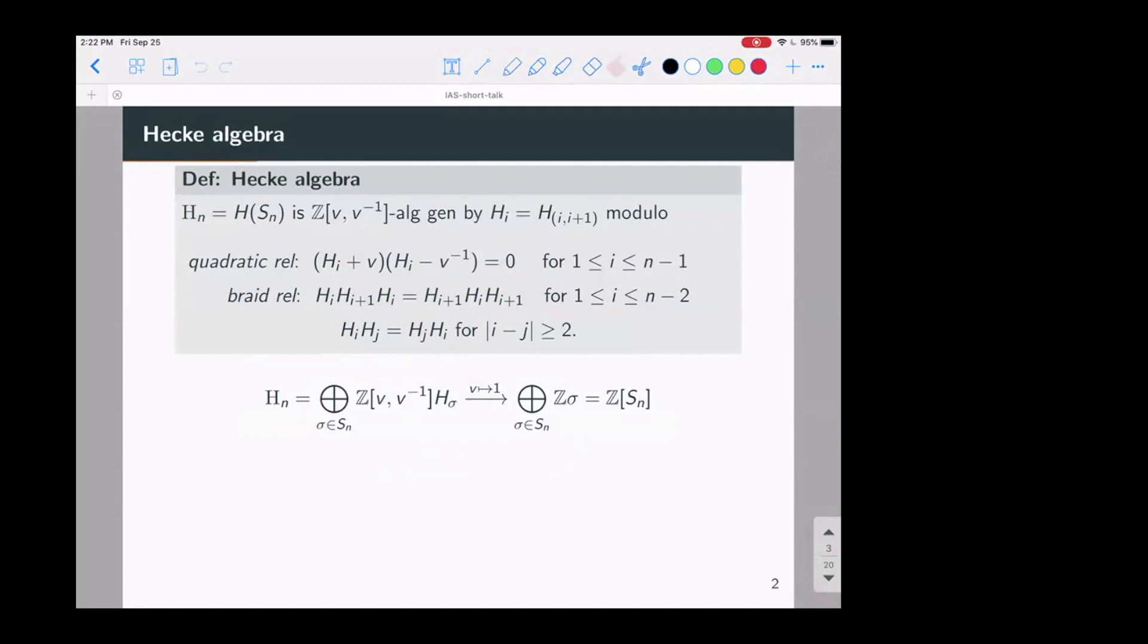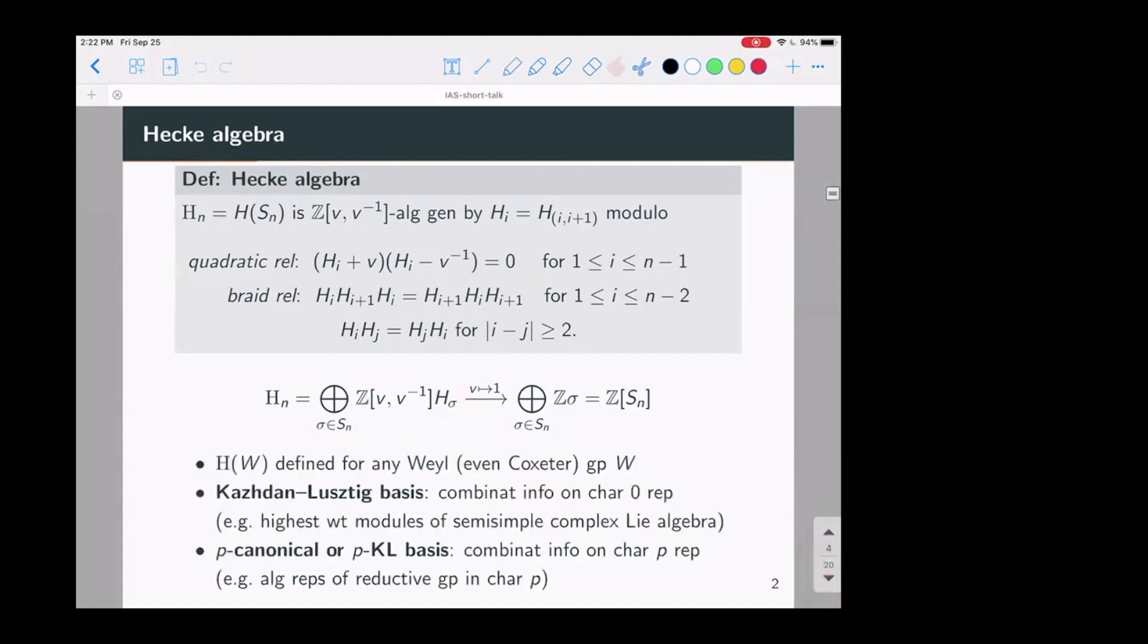And let's use an algebra that has the same, it's free over the polynomial ring. It has a standard basis labeled by permutations. And when you set V is equal to one, you recover the group algebra of Sn.